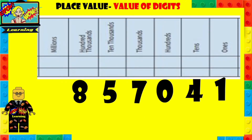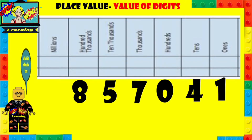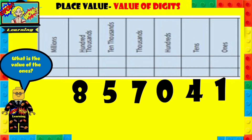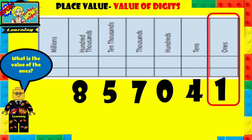Here we have a number: 857041. What is the value of the ones? You can pause this and then play it to see if you got the correct answer. So the ones is here. Now in the ones we can see a one, so the value there is one.